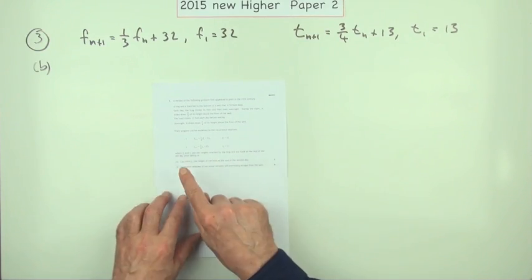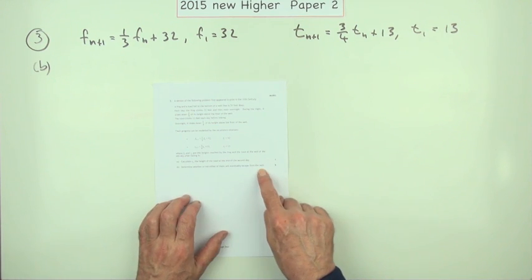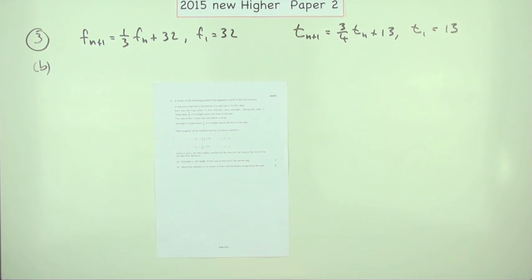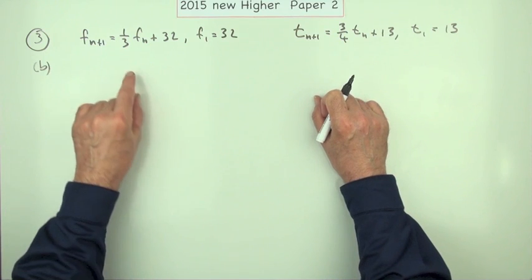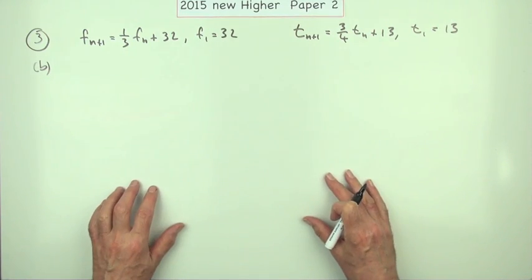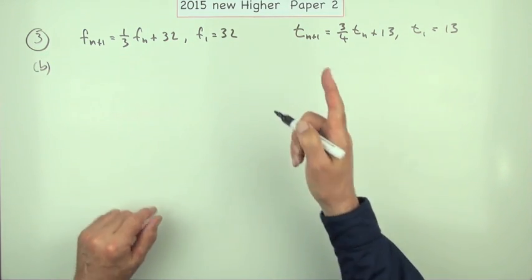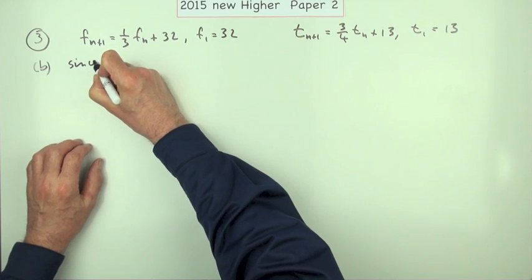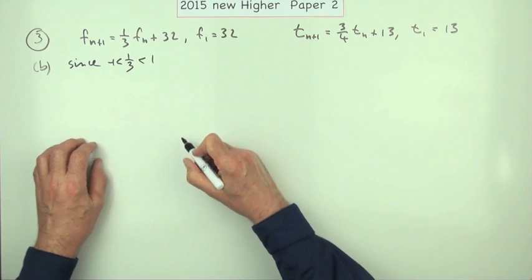Part B: determine whether or not either of them will eventually escape from the well. It seems quite clearly to indicate you have to examine both cases and determine in each case whether they will escape. Five marks. The first thing you should notice is that in both of these recurrence relations the coefficient is a proper fraction. That tells you that a limit exists for both of them. So the obvious way to approach this would be find that limit.